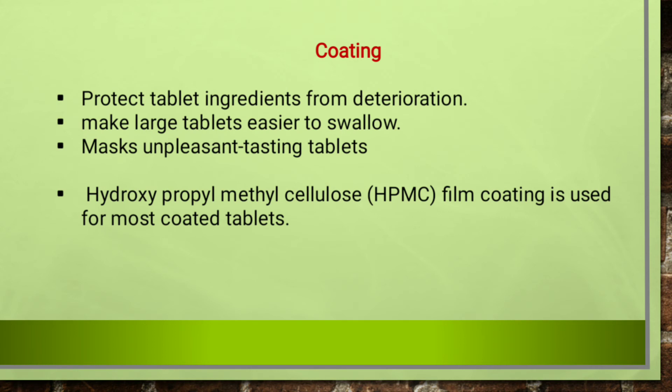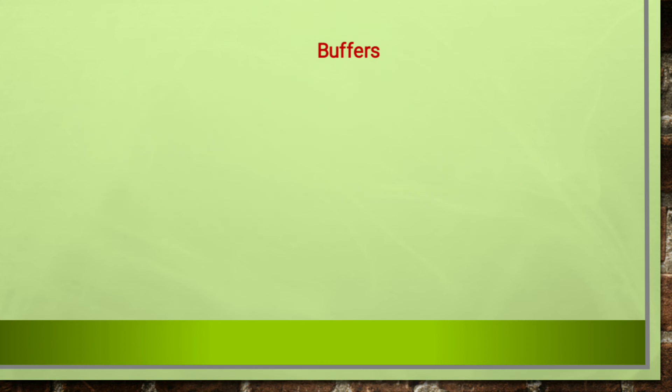The most common coating material is hydroxypropyl methylcellulose (HPMC), used as a film coating to give a proper coating that is free from sugar and potential allergens. Occasionally, other coating materials include synthetic polymers, shellac, corn protein, zein, and other polysaccharides. Capsules are also coated with gelatin.